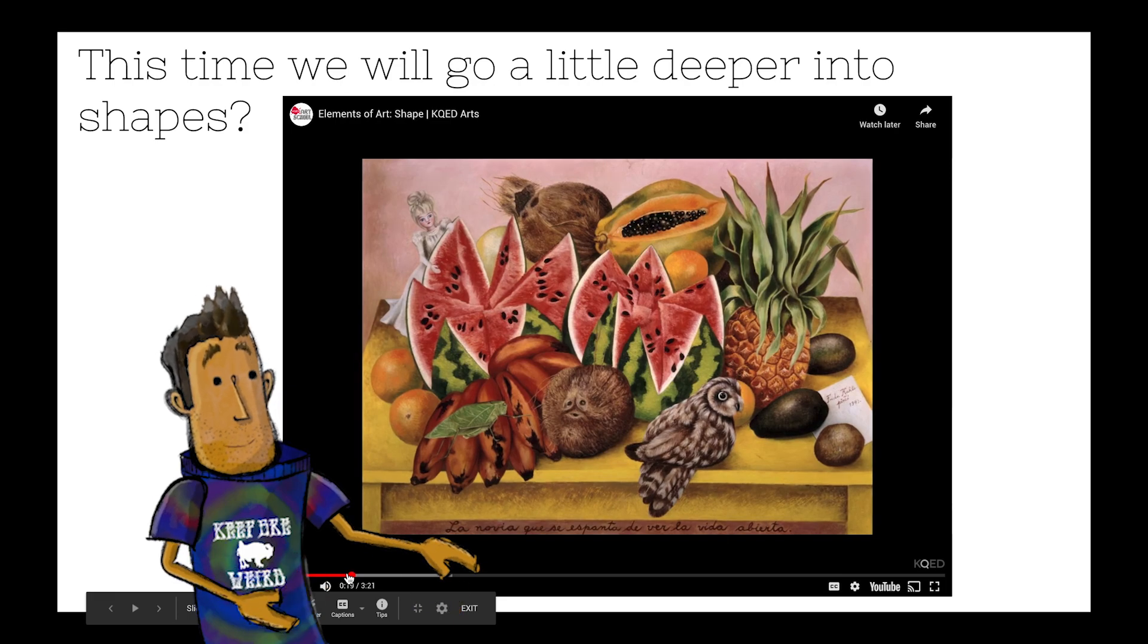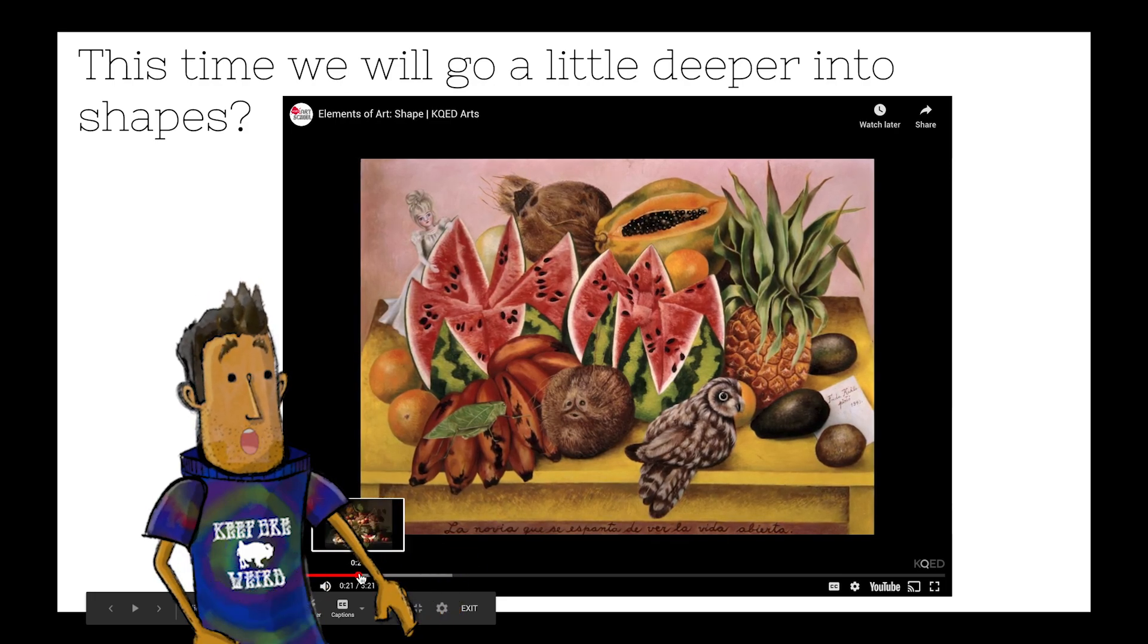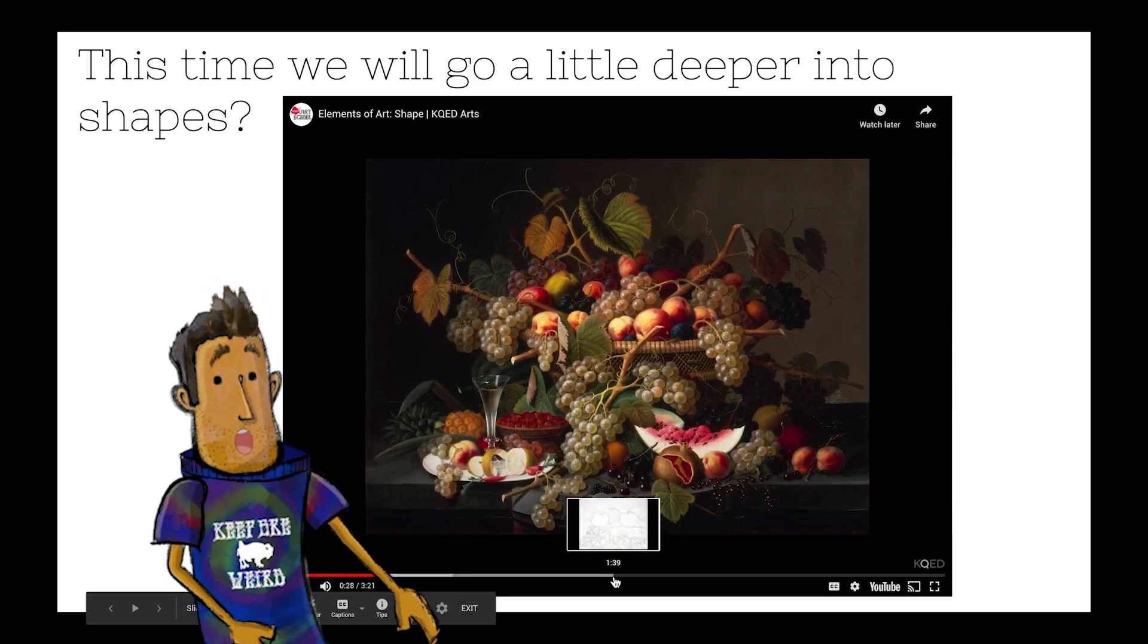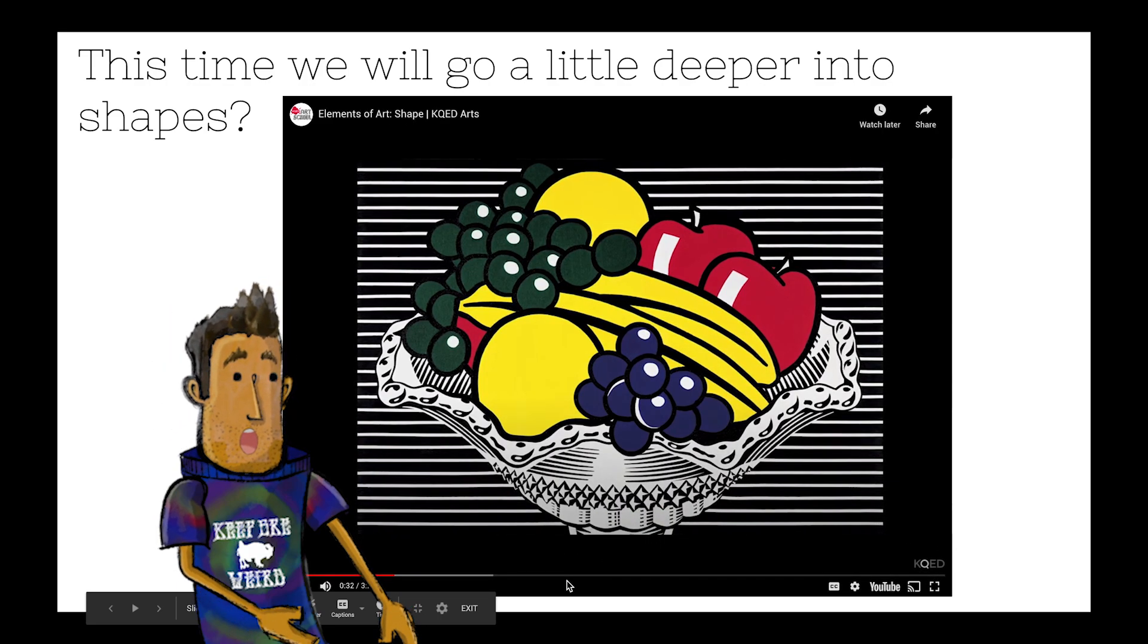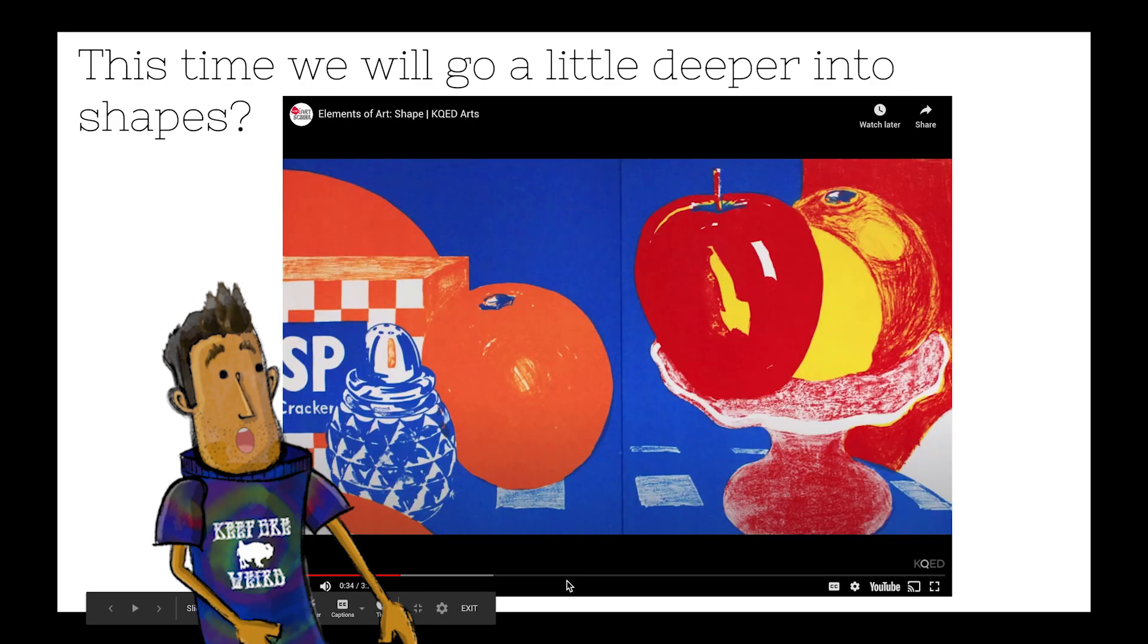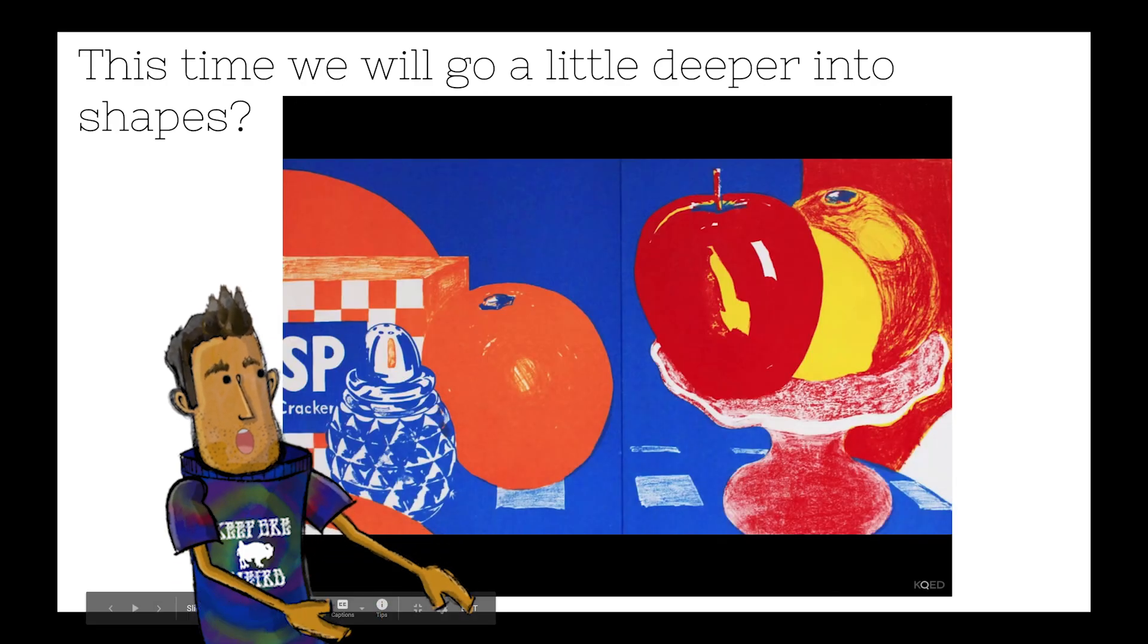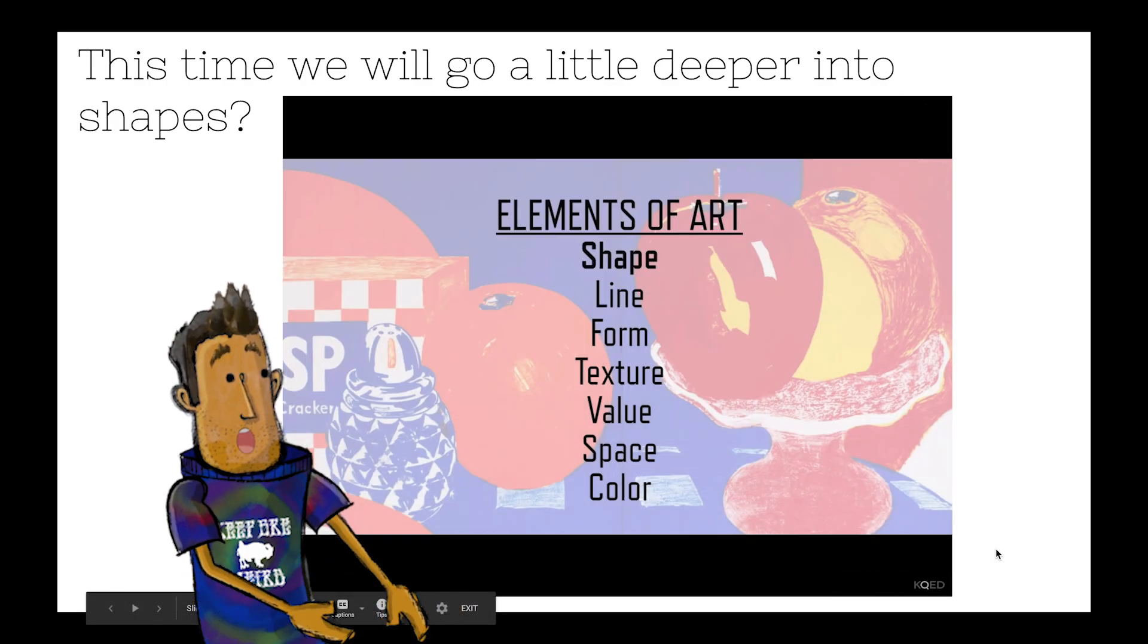Played a prominent role in the history of art. Looking at still lifes of fruit is a useful way of studying how artists approach making shapes. Shape is one of the seven elements.